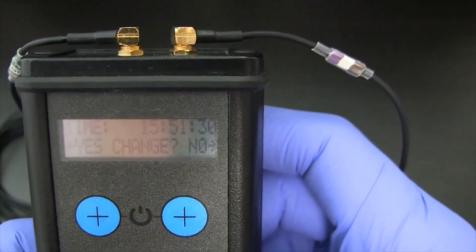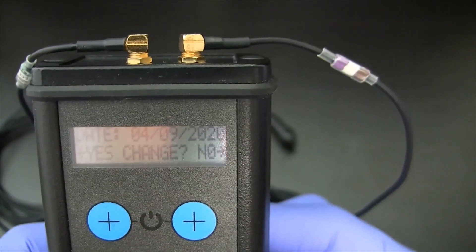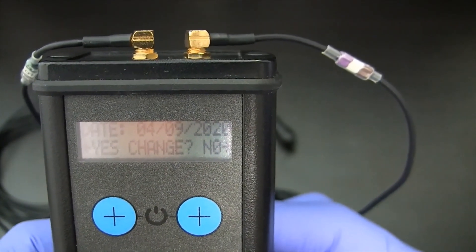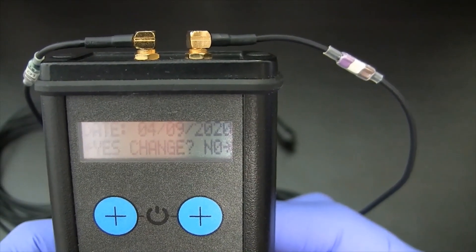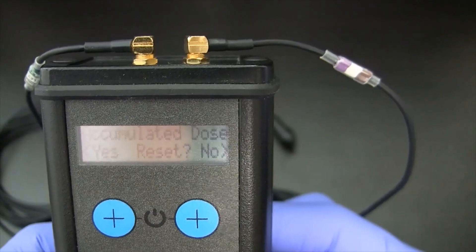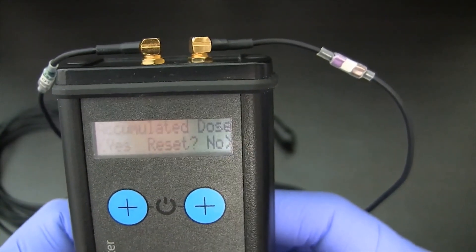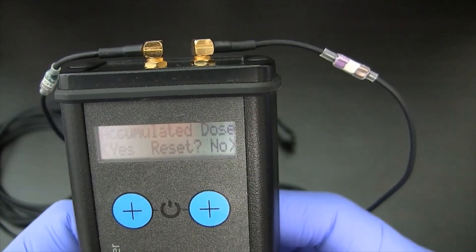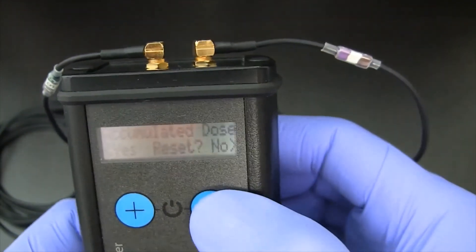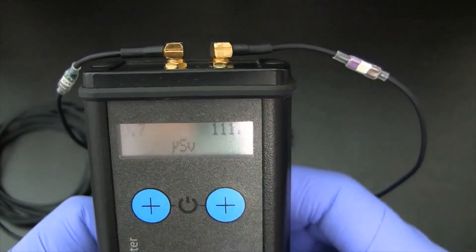This allows you to make a change if you want to the date and time. If you don't want the user to have to be bothered with this each time, you can disable it through the software that's run on the PC through the USB interface to make changes to the parameters. So in this case, it's timed out, it's past the date and time, and now it's asking me if I want to reset the accumulated dose. And I'm going to say no in this case. So by pressing this button, I'm selecting no. There again, it timed out.